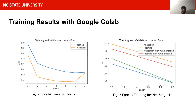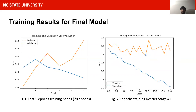Here you can see plots for training and validation losses for both training heads and training ResNet Stage 4+. It is evident that training ResNet Stage 4+ gives much greater reduction in loss compared to the heads alone. For the final model, we settled on training for 20 epochs on heads at a learning rate of 0.005 with data augmentation, and 20 epochs on ResNet layers 4+ at a learning rate of 0.001.